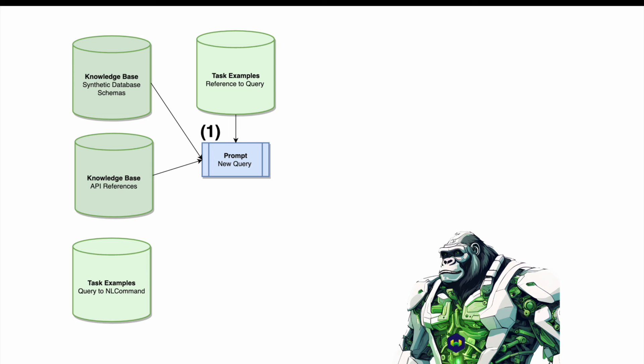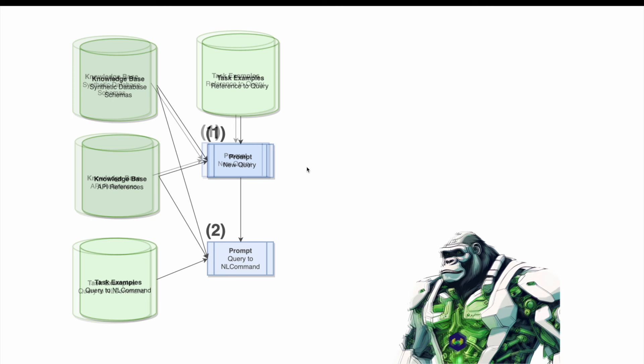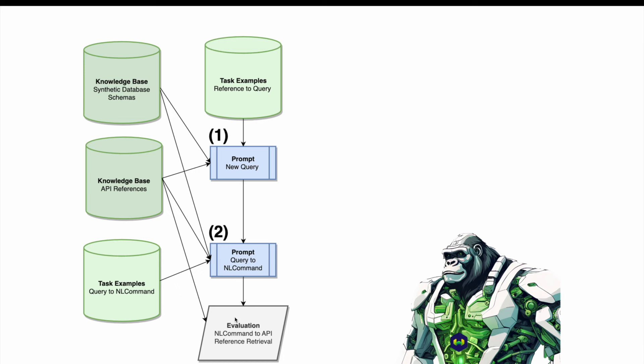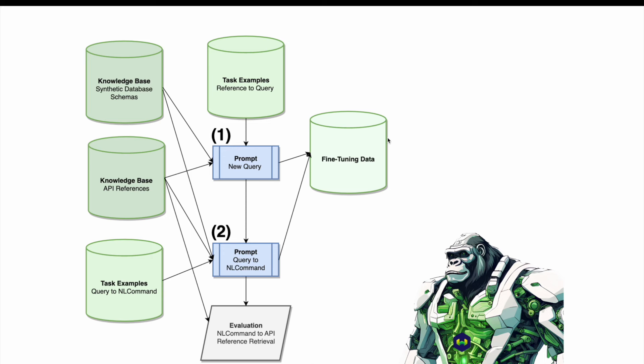We take the knowledge base of synthetic database schemas and API references, plus the task examples, and we create new queries by looping through all the database schemas and all of the APIs. We've created 2,300 new queries for these synthetic schemas. We then use this to create natural language commands for when someone would want to execute these queries. This is the entirety of the self-instruct algorithm. We also use the natural language command set to evaluate retrieval — we put the natural language command as our query and see if it returns the correct API reference.